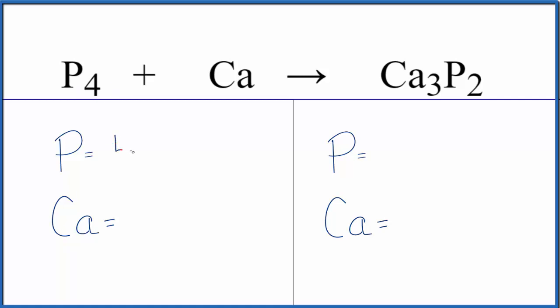Four phosphorus atoms and then just the one calcium. Product side we have two phosphorus and three calcium.